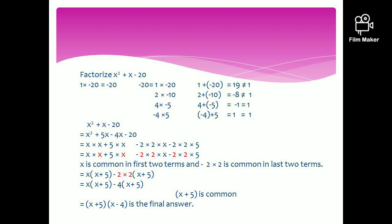Now let's move to another question: factorize x squared plus x minus 20. Multiply the coefficient of the quadratic term, 1, by the constant term, minus 20 — the answer is minus 20. Factors of minus 20: 1 times minus 20 gives 1 plus minus 20 equals minus 19, not 1. Then 2 times minus 10 gives minus 8, not 1. Then 4 times minus 5 gives 4 plus minus 5 equals minus 1 — close, but we need plus 1. So we write this as minus 4 times 5, and minus 4 plus 5 equals plus 1. Therefore, split x as 5x minus 4x.